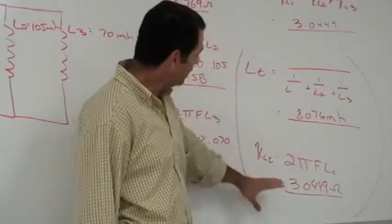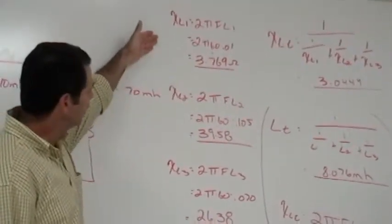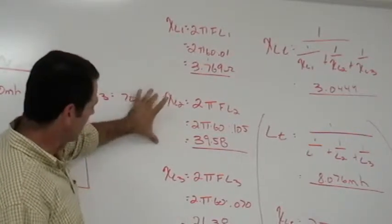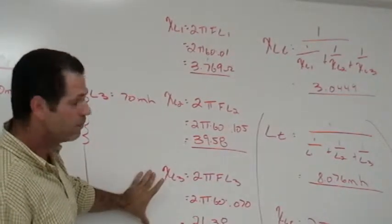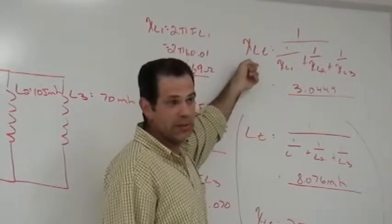Okay, this is one method of doing it. Another method of doing it is very similar to what we did in series. Find each inductive reactance of the component, and then reciprocate it, like we do in parallel.